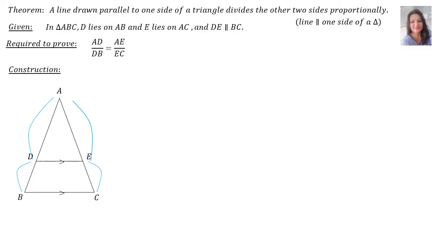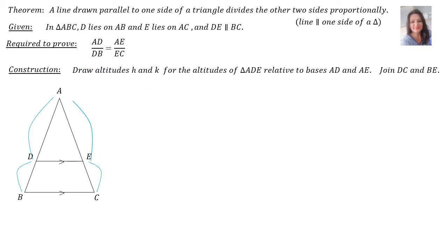We also need a construction. Draw altitudes H and K for triangle ADE relative to bases AD and AE. We will also join DC and BE.